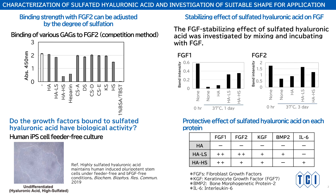Sulfated hyaluronic acid is an artificial compound that can bind to several growth factors. Dr. Mueller used sulfated hyaluronic acid to establish a feeder-free culture of human iPS cells without the addition of fibroblast growth factor 2. At the 2021 meeting, we discussed the preparation of sulfated hyaluronic acid with different degrees of sulfation and the binding of these materials to FGF2, and compared the binding strength to other glycosaminoglycans. The binding strength of highly sulfated hyaluronic acid to FGF2 was greater than heparin.